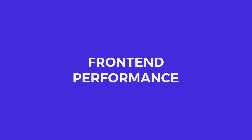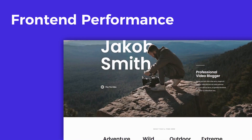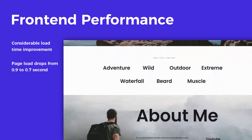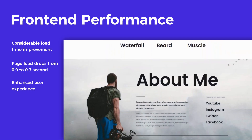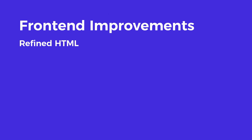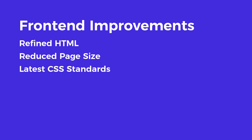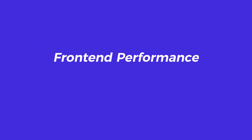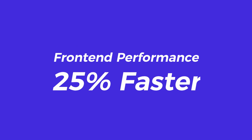The third major change in Astra 3.0 is front-end performance. We're obsessed with making Astra blazing fast — it was already one of the fastest themes around, but with the 3.0 update, we've made major improvements to enhance performance even further. We've refined the HTML output to reduce the page size and we've updated the CSS to comply with the latest CSS standards. These changes resulted in a front-end performance improvement of up to 25%.